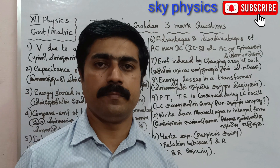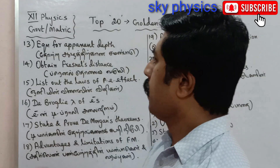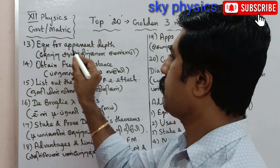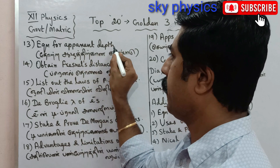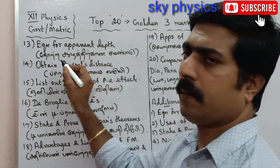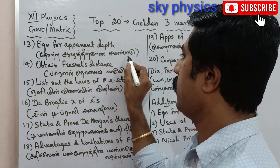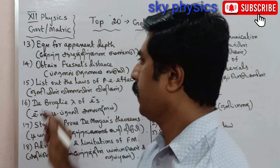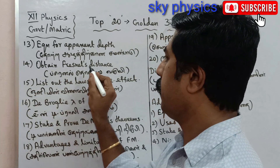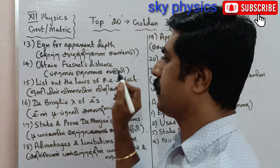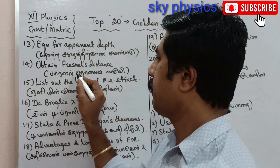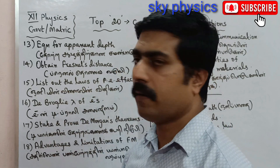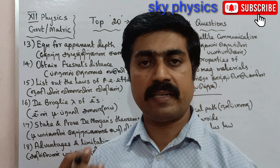Question number 13: Equation for apparent depth. (Tamil: One-Thu Thotra Aadath Thirukkana Summonpotdai Varuvi.) Question number 14: Obtain the focal distance. (Tamil: Frontals Tholaiwai Varuvi — derivation with diagram, one corrector drop.)